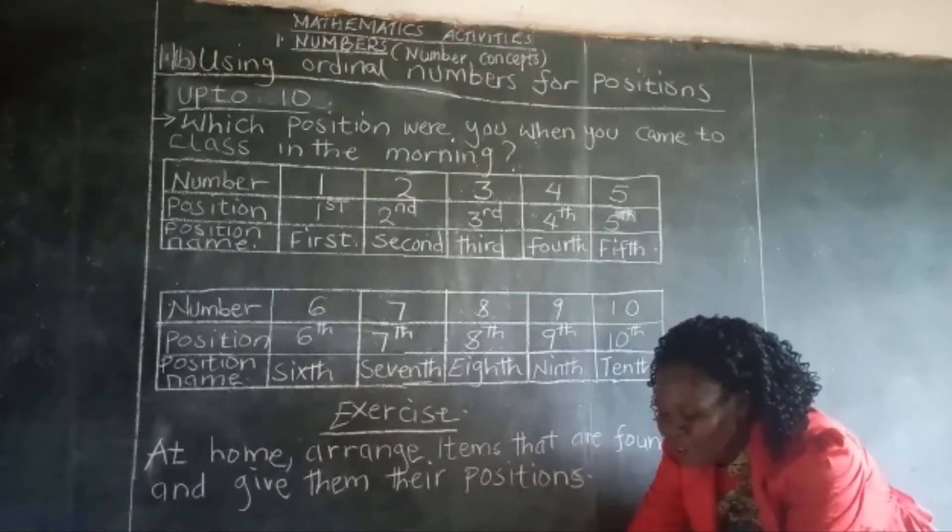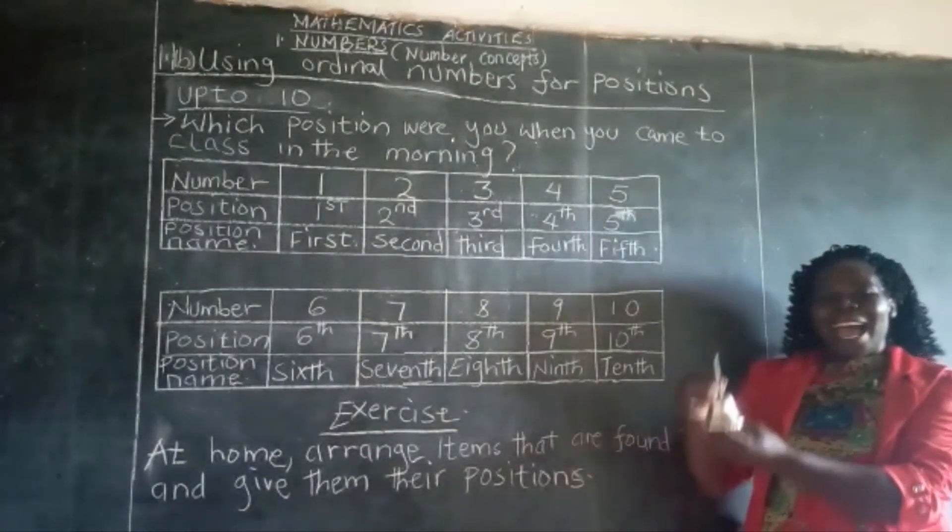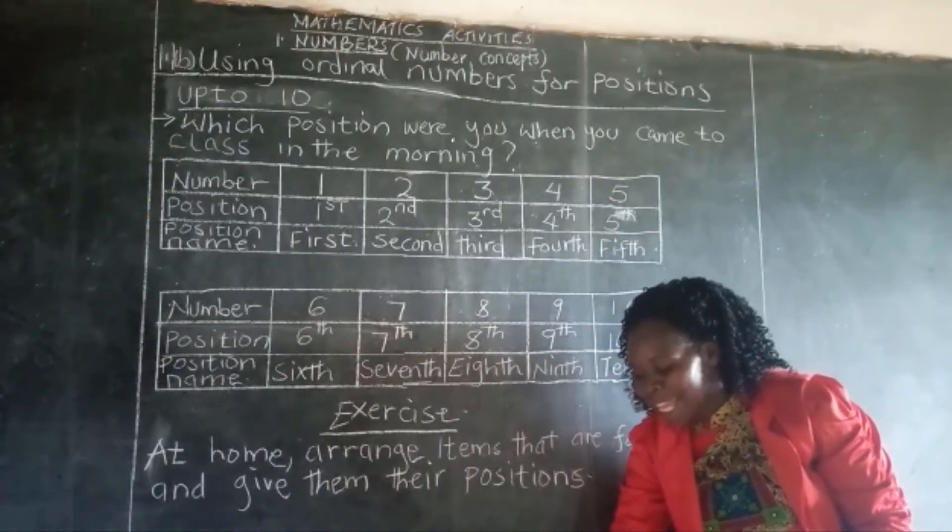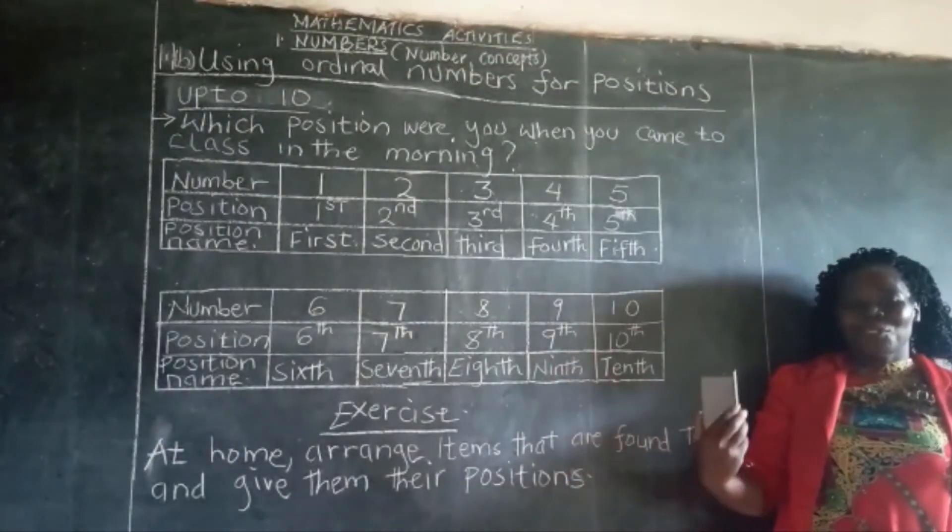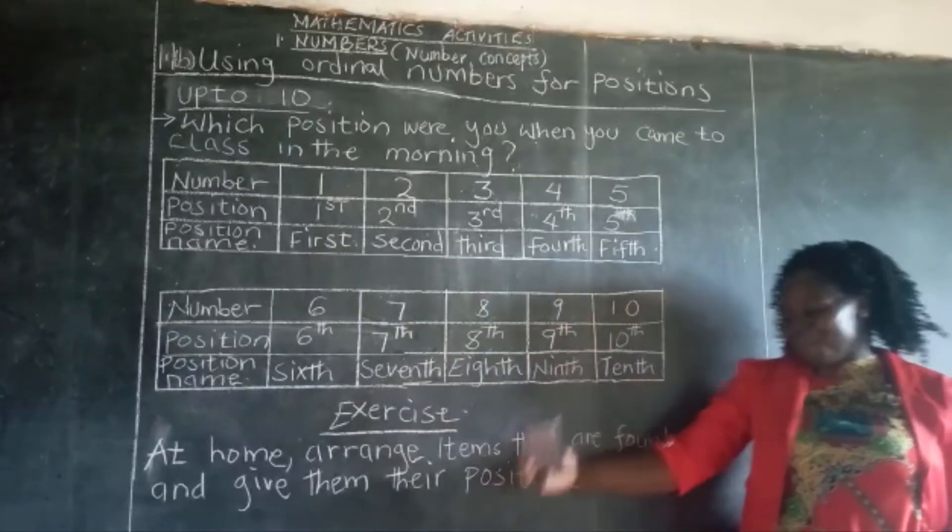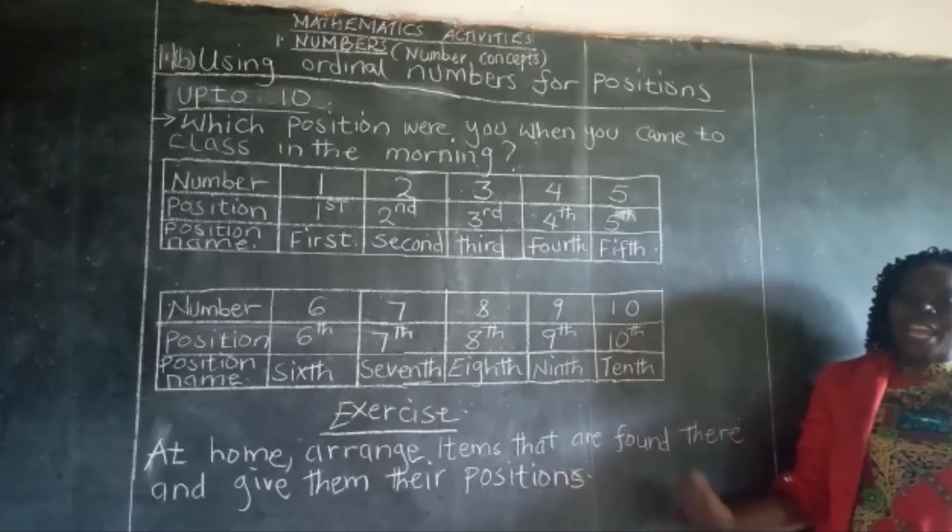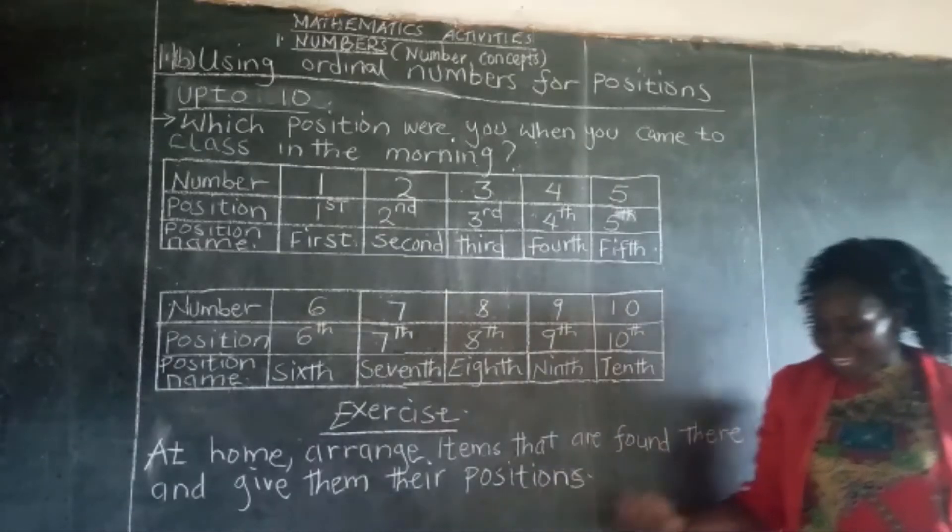We also have a bell. A bell is in the fourth position. And lastly, we have a phone. This phone is in the fifth position. So these ones are the positions of the items that we have here.